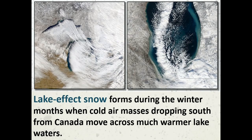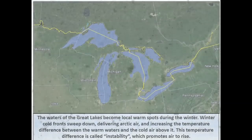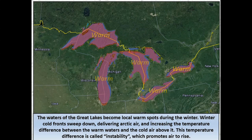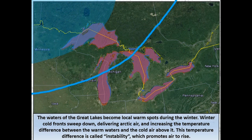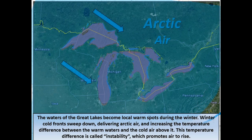Lake effect snow forms during the winter months when cold air masses dropping south from Canada move across much warmer lake waters. The waters of the Great Lakes become local warm spots during the winter. Winter cold fronts sweep down, delivering arctic air, and increasing the temperature difference between the warm waters and the cold air above it. This temperature difference is called instability, which promotes air to rise.